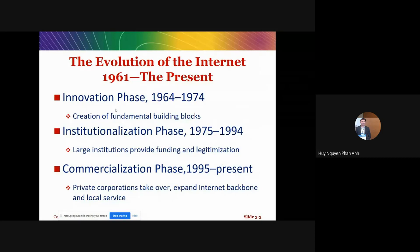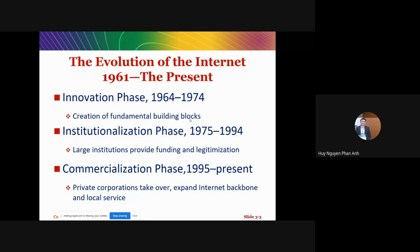This slide shows the evolution of the internet from 1961 until now. Firstly it just connected some local mainframes together, then it expanded to large institutions, and then it moved to the commercialization phase from 1995 until now.